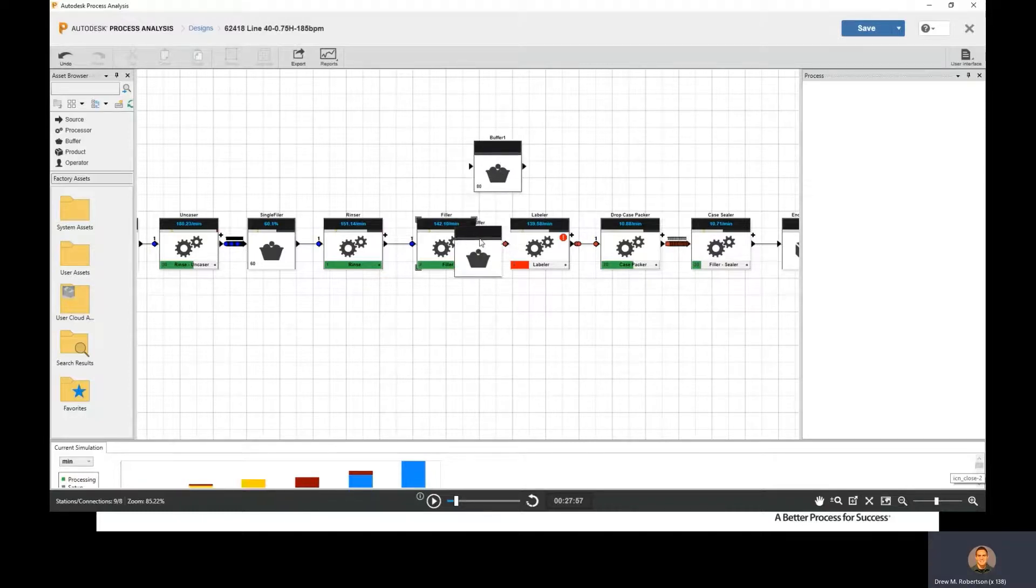But we are also able to add new equipment in here. We can add another buffer between the filler and the labeler, and then you can draw them in and we could go back and update our model to have a new piece of equipment in there and add that buffer between the filler and the labeler.